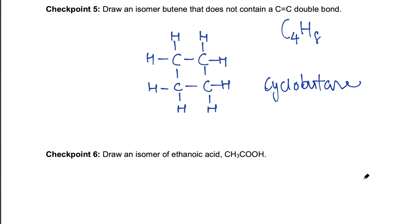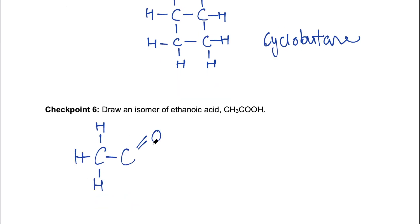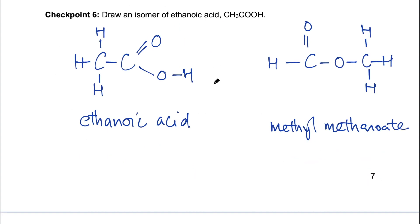See if you can do the next one. An isomer of ethanoic acid. Let me draw the structure of ethanoic acid for you. We can rearrange it in this way while still satisfying the bonding rules. So on the left, we have the carboxyl functional group and on the right, the ester linkage. There are different functional groups. So this is also known as functional group isomerism.